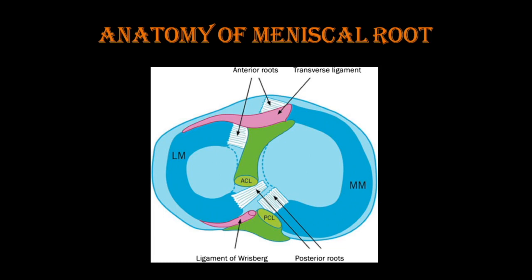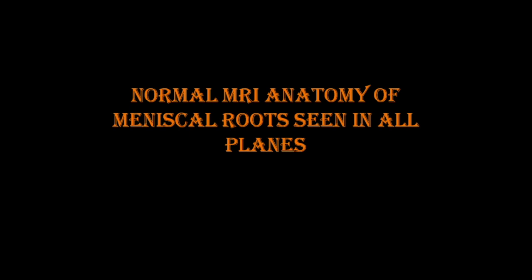Coming to the anatomy of the meniscal roots: menisci are C-shaped structures, the medial meniscus having a wider C and the lateral meniscus a smaller C. The anterior transverse ligament (or geniculate ligament) connects the anterior horns of both menisci. The anterior root of the medial meniscus has the largest footprint and is located anterior to the root of the lateral meniscus. Posteriorly, the roots are closely related to the posterior cruciate ligament and the ligament of Humphrey/Wrisberg.